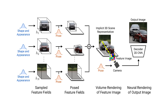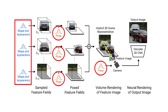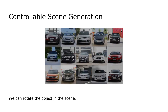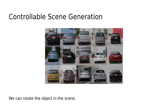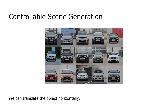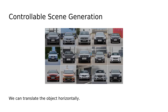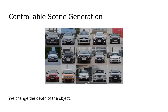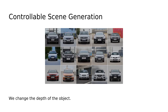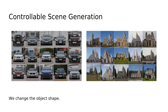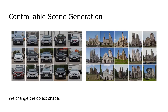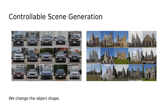Crucial for achieving control of image synthesis is that while during training we randomly sample the object as well as the camera poses, at test time we have explicit control over them. And of course the same applies to the individual shape and appearance codes. Here we show results for rotating the object. Similarly, we can also translate the object horizontally. And here we show results for changing the depth of the object. We now keep the object poses as well as the background fixed and only change the shape of the object.